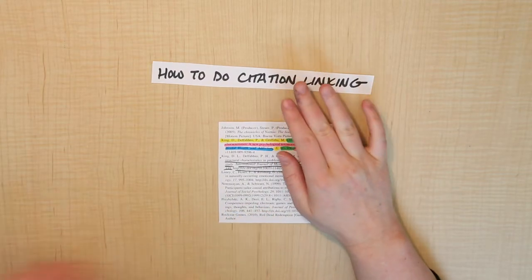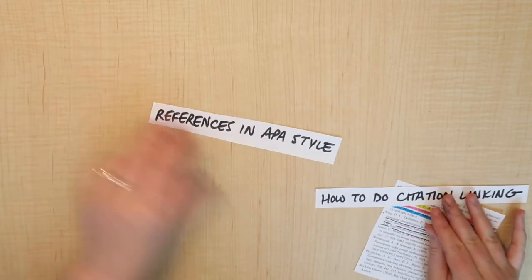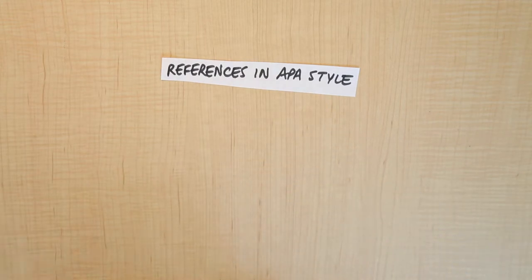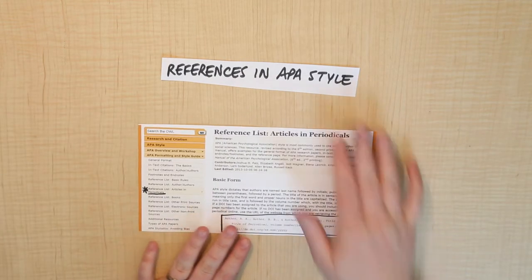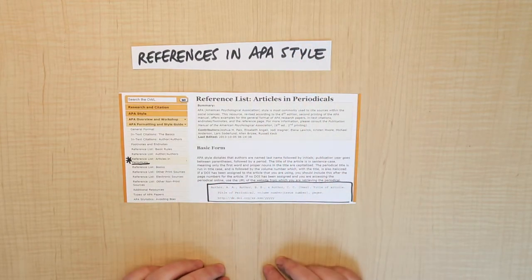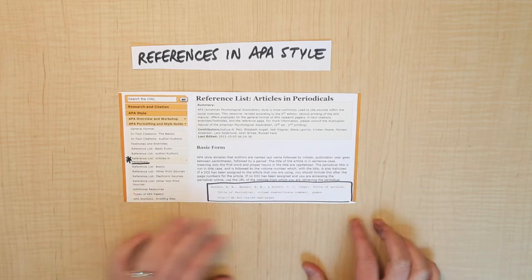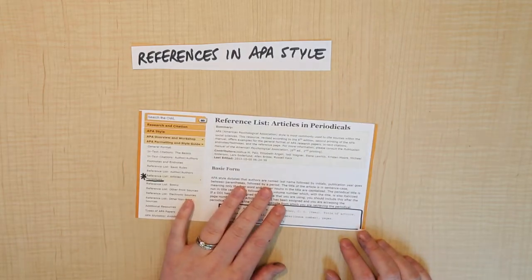Finally, once we did that, we talked about how to actually do references of your own in APA style. We used the website APA Online Writing Lab and talked about how to use the examples on that website to piece together your reference list, kind of like a puzzle.